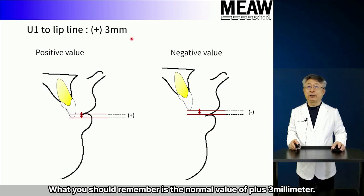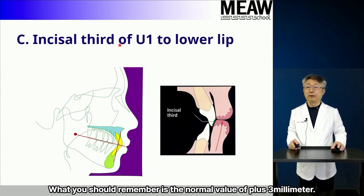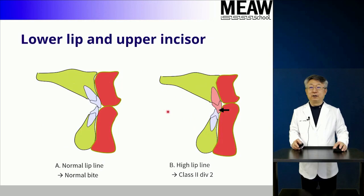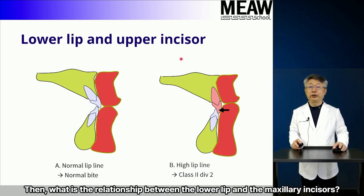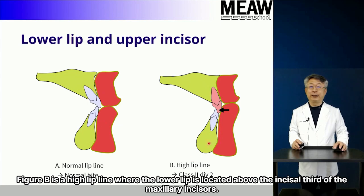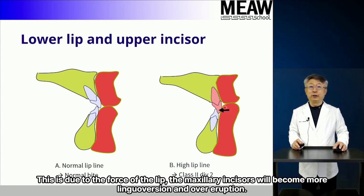What you should remember is the normal value of plus 3 mm. The following is mainly used in prosthetics: the upper point of the lower lip should be located in the incisor third of the maxillary anterior tooth. Figure A shows a normal lip line. Figure B is a high lip line where the lower lip is located above the incisor third of the maxillary incisors. This is due to the force of the lip, causing the maxillary incisors to become more linguoversion and over-eruption.